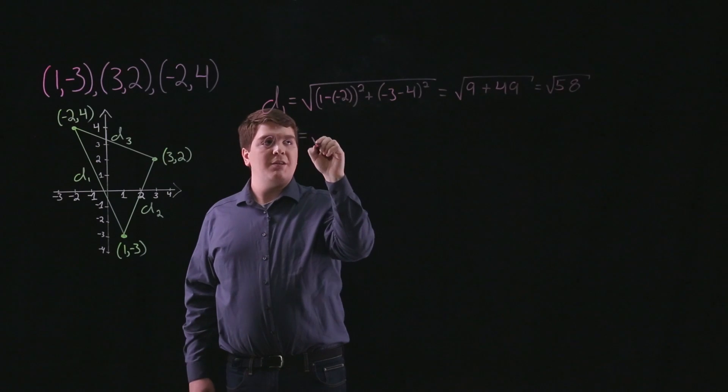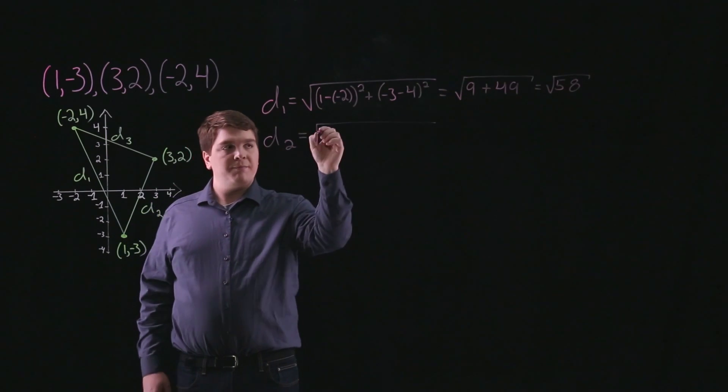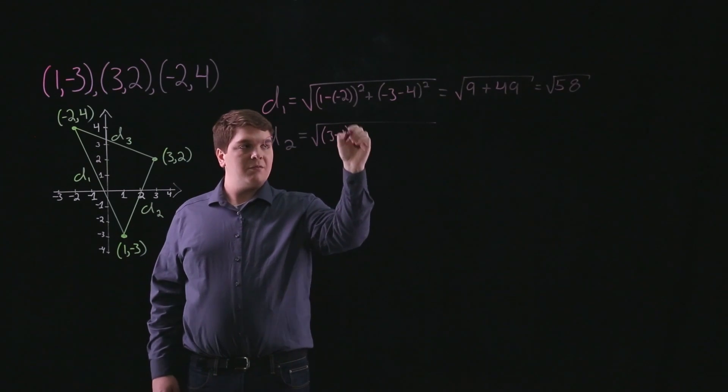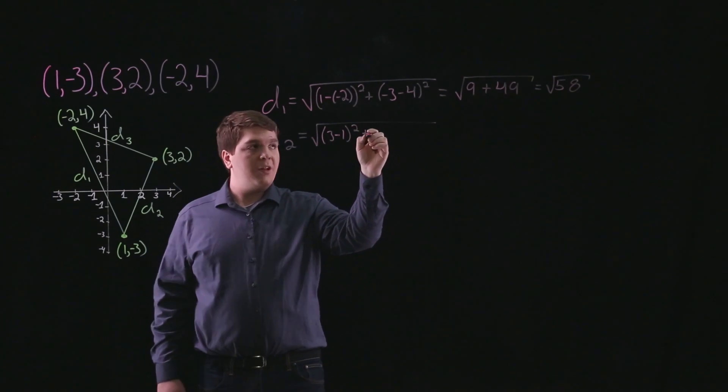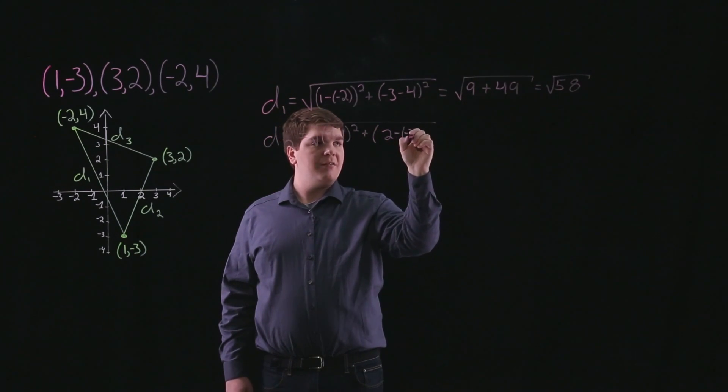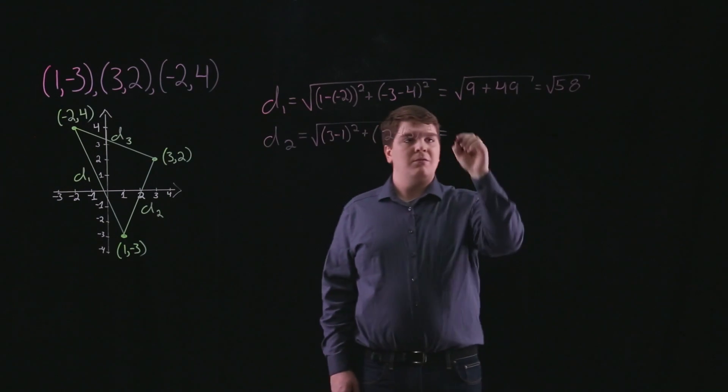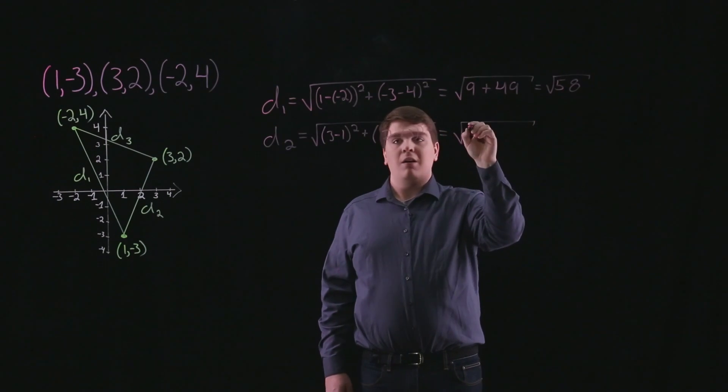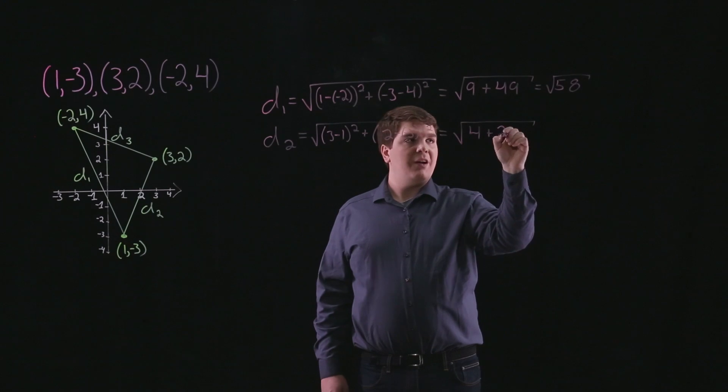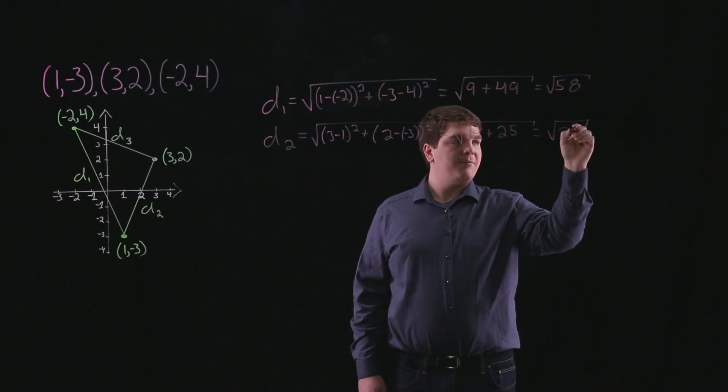d2 is equal to the square root of (3 minus 1) quantity squared plus (2 minus negative 3) quantity squared, which is equal to the square root of 4 plus 25, or the square root of 29.